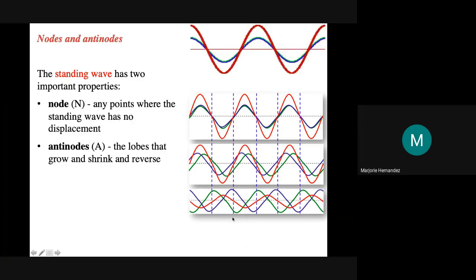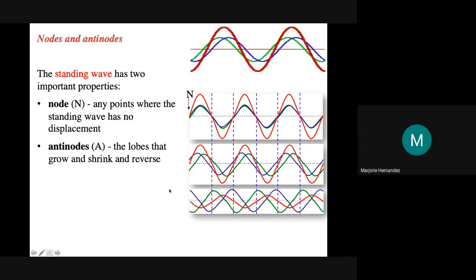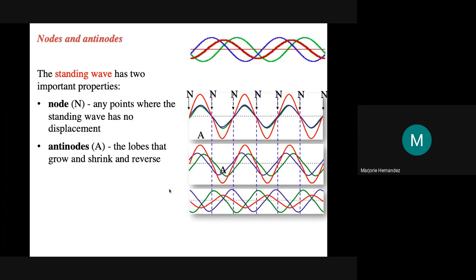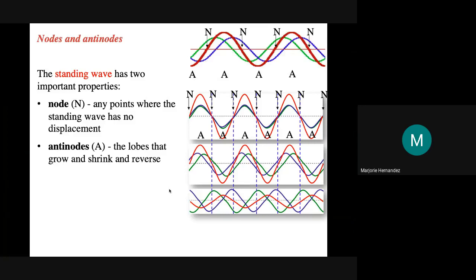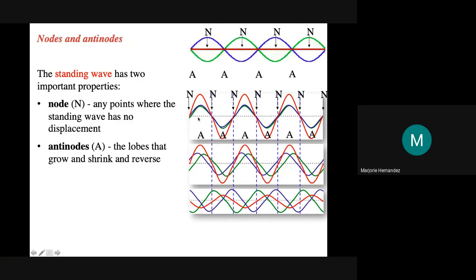For example, if I give you a standing wave diagram and ask where the nodes are, they should be here — you have nodes here and the antinodes will be here. Looking at it from the top, the node will be there and the antinodes will be here. Take note that if you have a node, that is the point where there is no displacement.